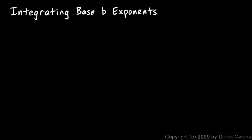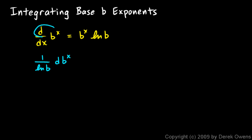Now we'll talk about integrating base-b exponents. Earlier we saw that the derivative with respect to x of b^x equals b^x times the natural log of b. Knowing that allows us to integrate exponential functions with any base. I'm going to take this equation and rearrange it: 1 over the natural log of b times d(b^x) equals b^x dx.